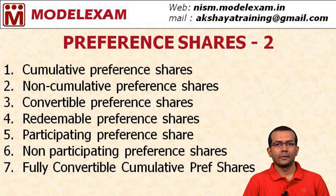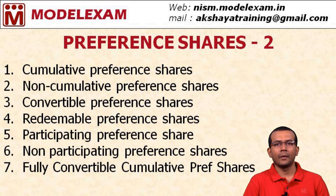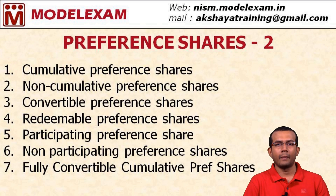Now we will look at the different types of preference shares. The first type is cumulative preference shares — cumulative means dividends get added up and are paid in subsequent years. Non-cumulative means dividends on the preference shares do not get accumulated. If the company makes a loss in a few years, then for those years dividend will not be declared and the dividends will not accumulate either.